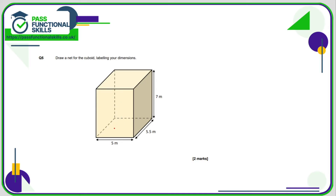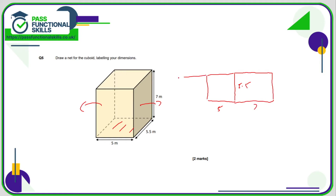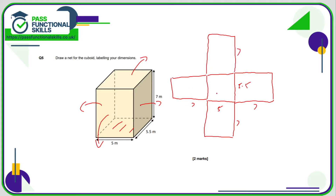Now we want a net for this cuboid. I'm going to start with a five by 5.5 base — if you're using a ruler that's going to be a lot easier. I'm going to pull the sides out, so that's 5.5 by seven on each side. Attached to the base on the top and bottom, I'm going to put the front and the back — that's a five by seven. The only remaining face is the five by 5.5 top, which I'll add to the top here. There are other ways you could do this net, but this was the most logical.